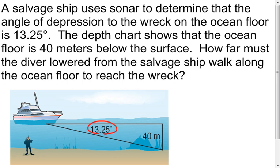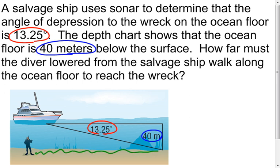The depth chart shows that the ocean floor is 40 meters below the surface — I have that right here in my picture. It wants to know how far must the diver, lowered from the salvage ship, walk along the ocean floor to reach the wreck. The diver swims to a point directly above the wreck and then falls down. Either way, we're going to find that length that the diver's going to walk or swim.